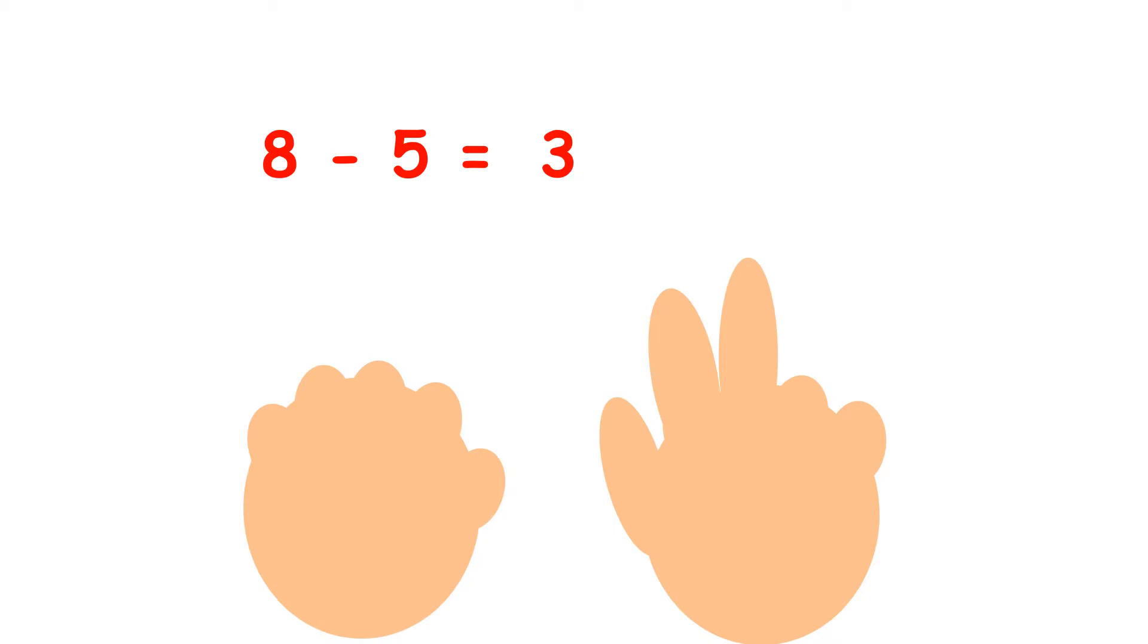And I can check my answer to make sure that I've got it right, by counting as I put down my fingers. So I say 5, and then I put my fingers down as I count on from 5: 6, 7, 8.